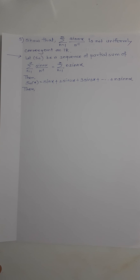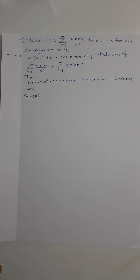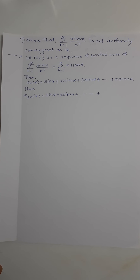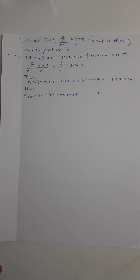Now what will S_{2n}(x) be? It will be the same — all the first terms remain the same — but we will add terms up to 2n, so the last term is 2n·sin(2nx).